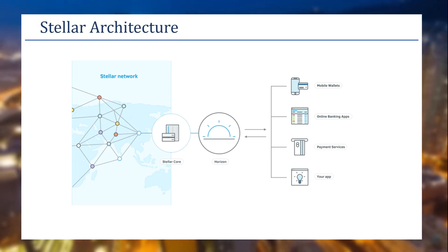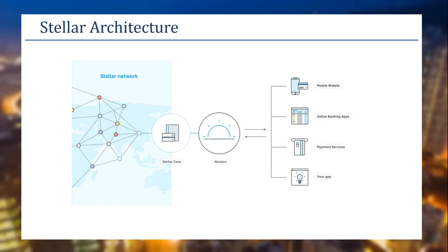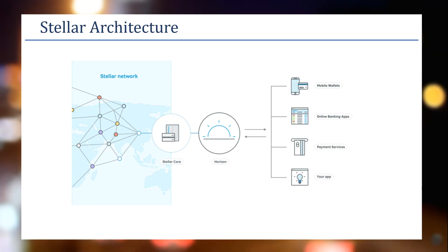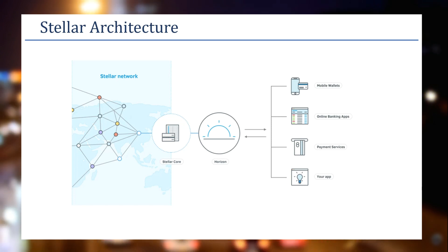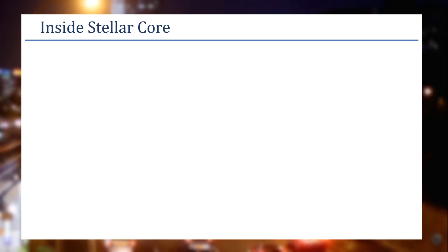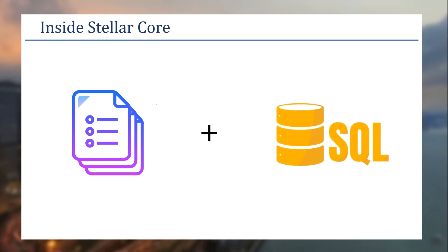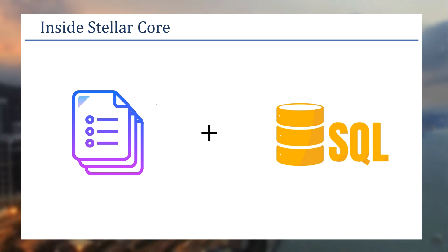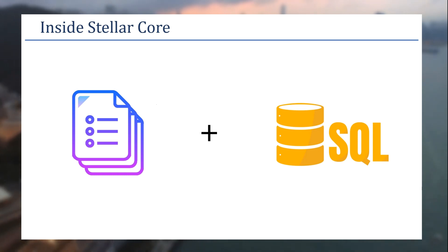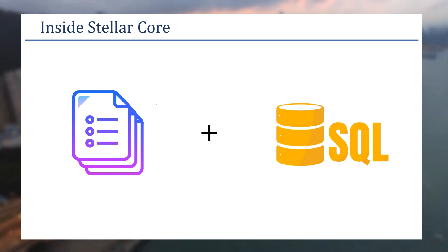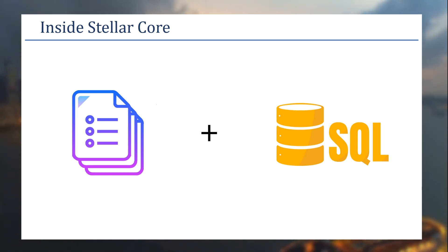Horizon has HTTP services where you can send transactions in XDR format, which get passed to Stellar Core. The network then validates and approves or rejects those transactions. To retrieve transaction-related data, you call the Stellar Horizon APIs, which retrieve information from Stellar Core and transform it for the front-end application. You can build mobile wallets, online banking applications, or any other application directly connected to Stellar Horizon. Inside Stellar Core, there are two things: the Stellar Ledger and an SQL database.